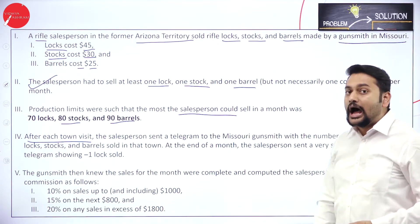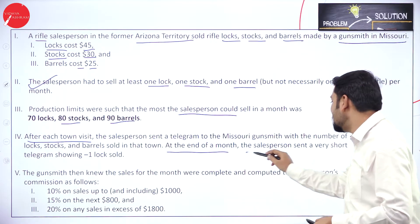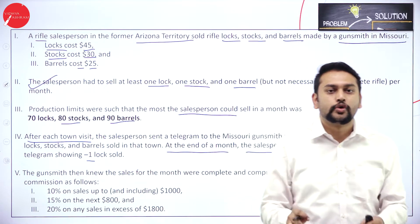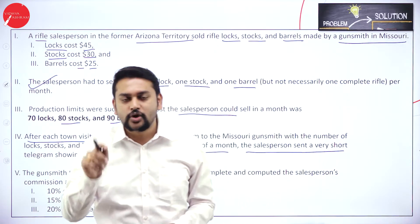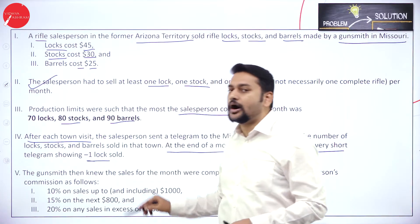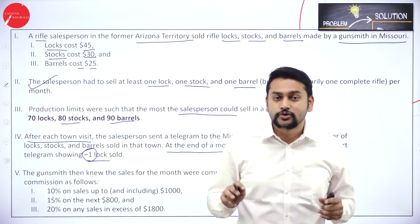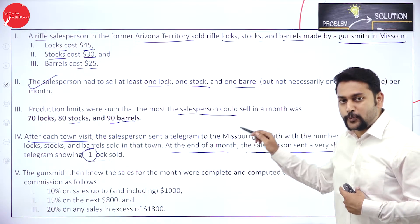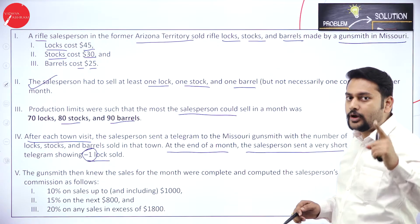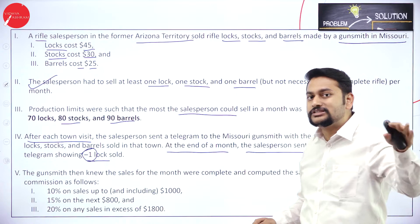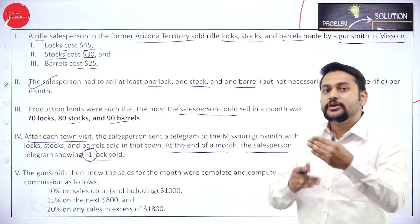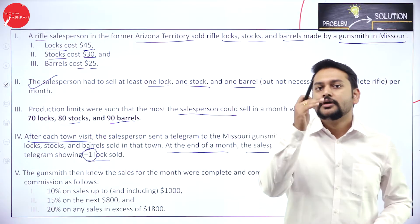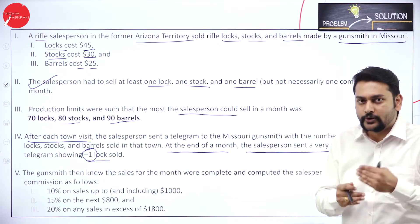At the end of the month, the salesperson sent a very short telegram saying 'one lock sold.' After visiting each and every town, he will keep updating the manufacturer with how many locks, how many barrels, and how many stocks he has sold. It will be going on in a loop — that's what you need to observe here.